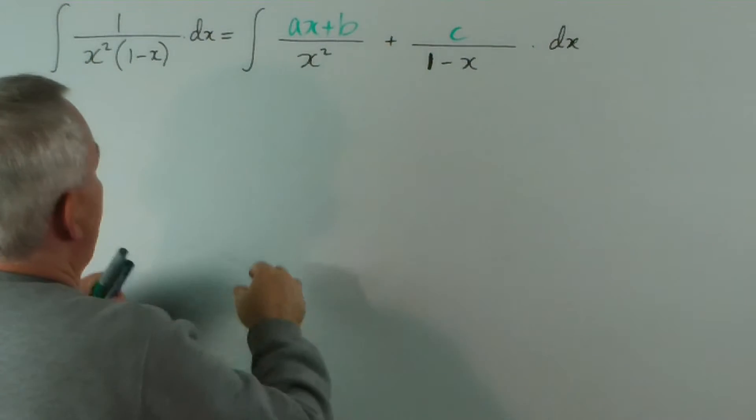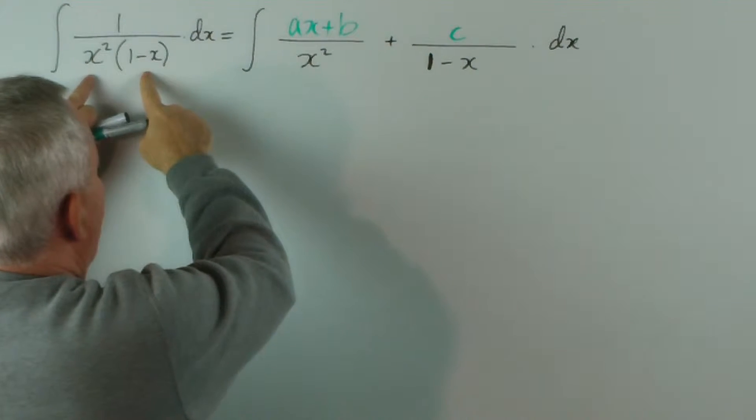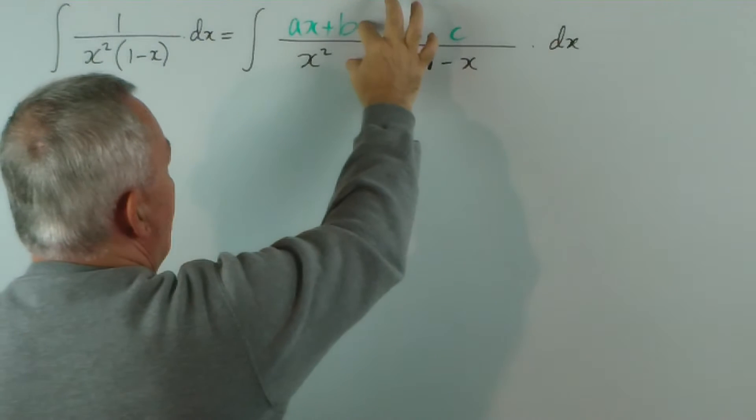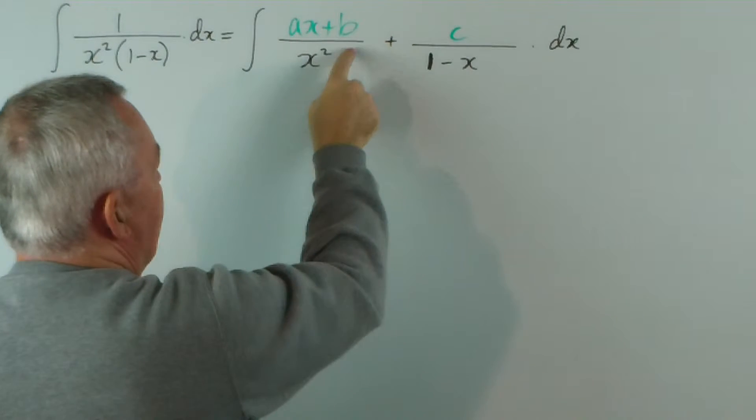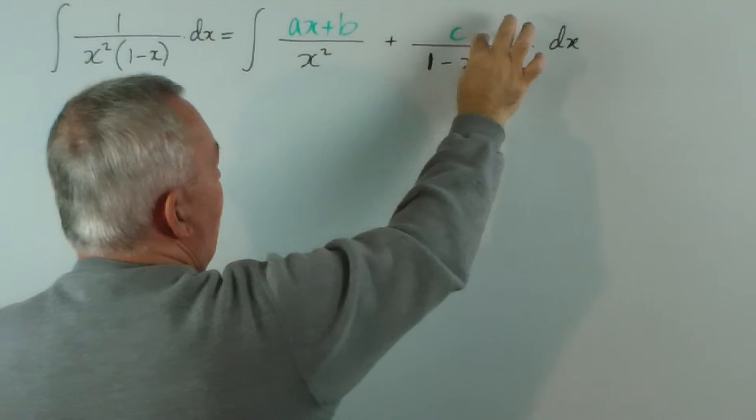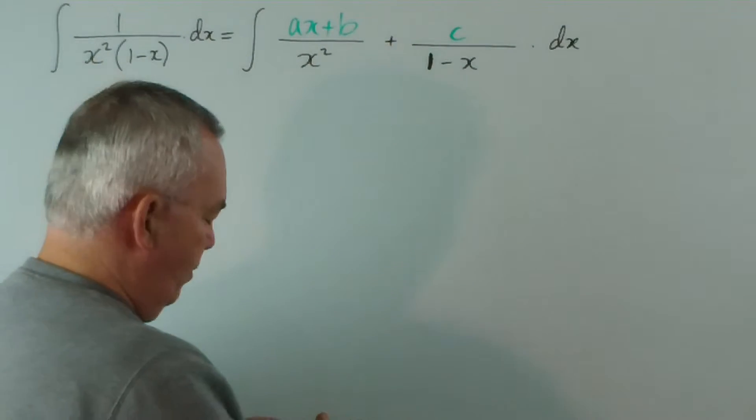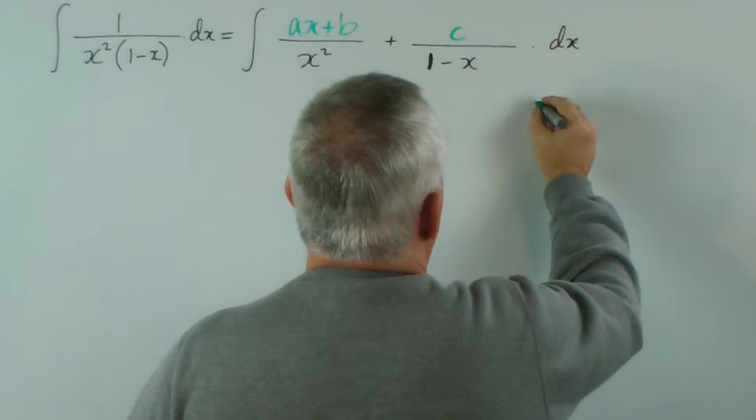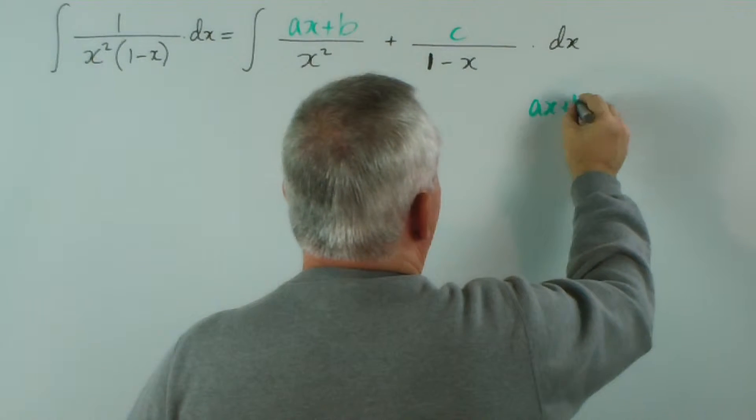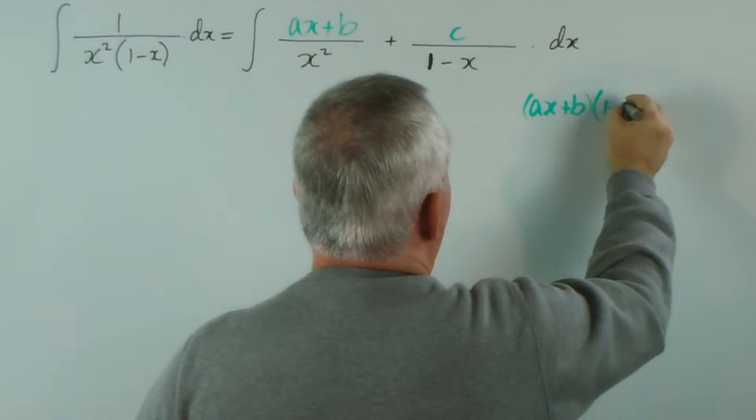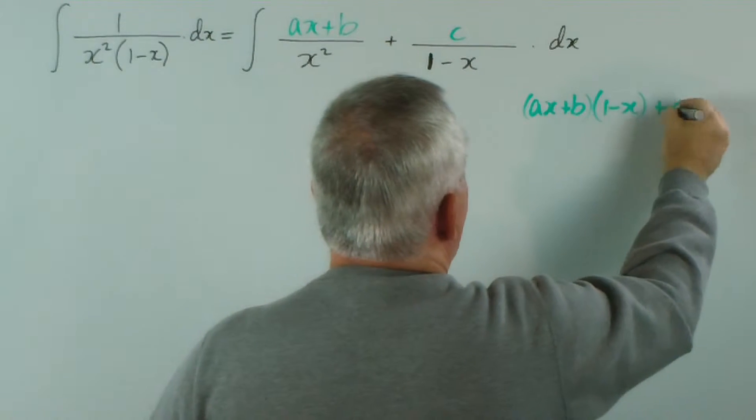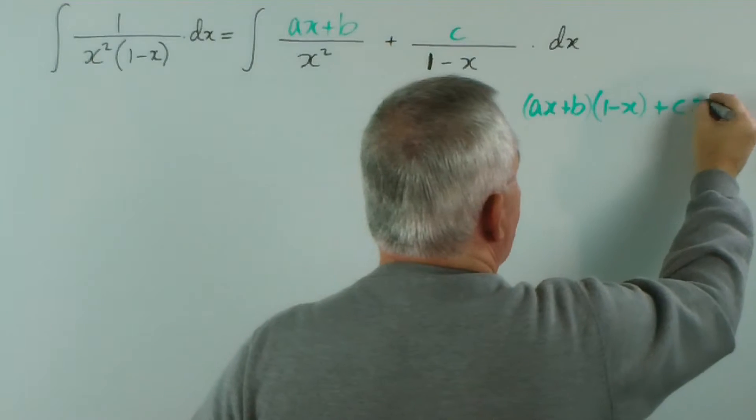Well, of course, to get this common denominator, we would multiply top and bottom of this by 1 minus x and top and bottom of this by x squared. So what would we get on the top? We would get ax plus b multiplied by 1 minus x and we would get c multiplied by x squared.